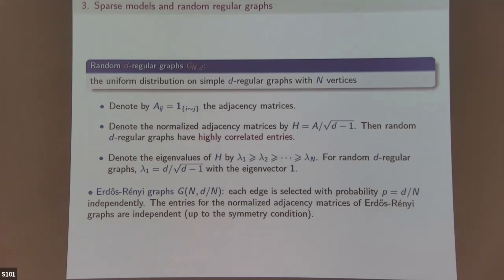The random d-regular graph has a very large trivial eigenvalue: just take the all-ones eigenvector. We are interested in the non-trivial eigenvalues. Similarly you can define the Erdős-Rényi graph, where instead of fixed d, you flip a coin with probability p = d/n, so the expected number of edges equals d. In Erdős-Rényi each edge is chosen independently.